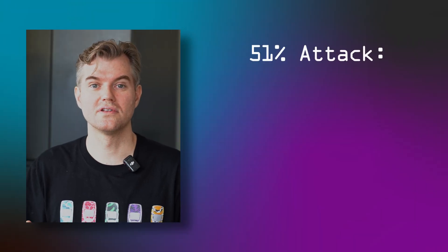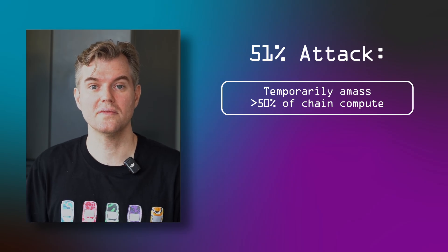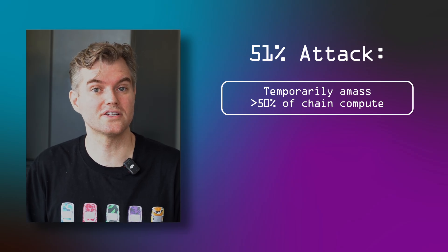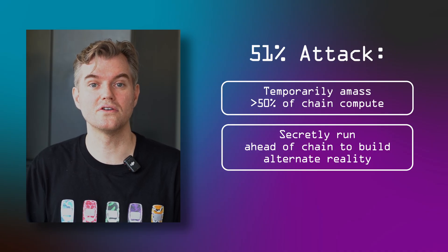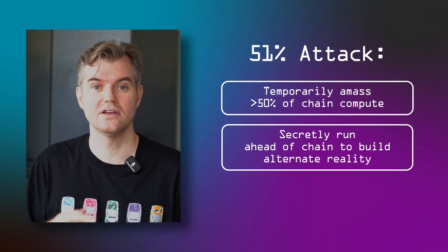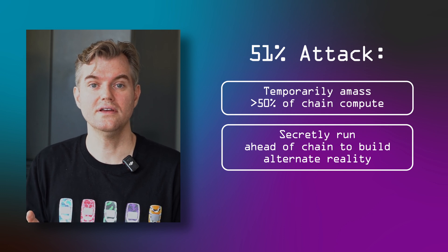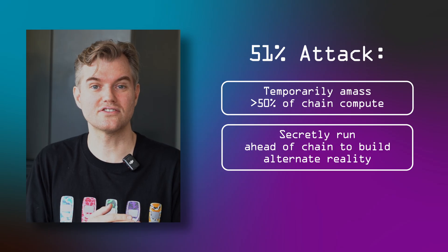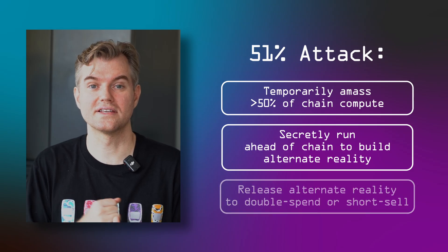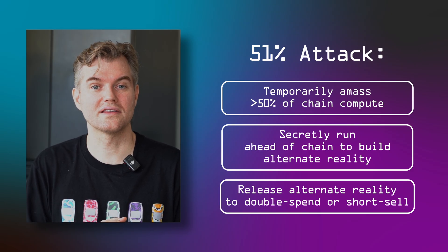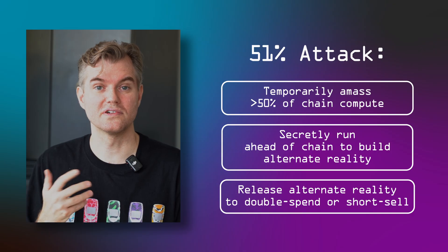To recap, what are the steps to launch a 51% attack? First, you amass more computational resources for some period of time than everyone else combined — which for many chains isn't all that much. Then you start solving these cryptographic puzzles. However, you're not telling anyone else about your solutions, and you're progressing on the chain faster than anyone else. You get to choose when to announce your alternate reality, thereby invalidating the recent history people know about the chain and replacing it with your own history. The attacker can then either double-spend their own tokens or, more likely, cash out through short-selling a coin that is now worth less because people trust it less.